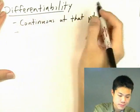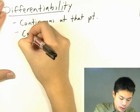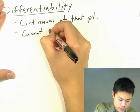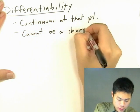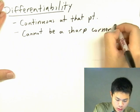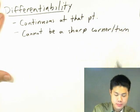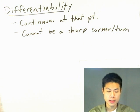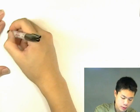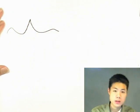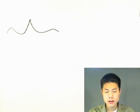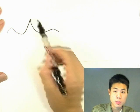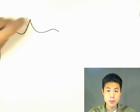The second condition is that it cannot be a sharp corner or turn. If there's a sharp corner or turn in the graph, you cannot find the derivative at that point. Say we have a graph that looks something like this. Does the graph have a derivative at this point right there? The answer would be no.